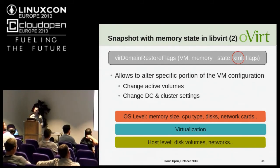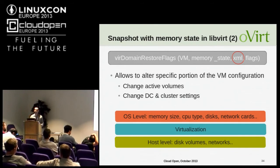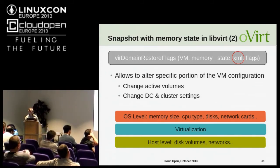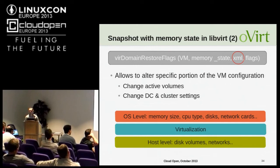We can think of the XML parameter as having three layers. One layer is the OS level — what the operating system inside the virtual machine sees, such as memory size, disk, etc. Another layer is the host level — what really exists in the hardware. And the virtualization layer bridges those two. The XML parameter lets us make changes at the host level layer, and those changes are abstracted by the virtualization layer for the operating system inside the virtual machine.